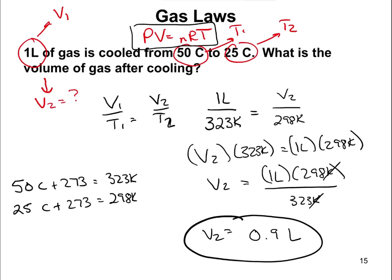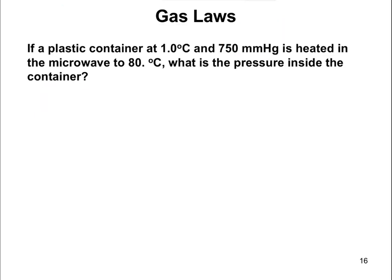Next problem: if a plastic container at 1 degree Celsius and 750 millimeters of mercury is heated in the microwave to 80 degrees Celsius, what's the pressure inside? This explains why you always take the lid off Tupperware before microwaving — because using PV equals nRT, increasing temperature means pressure goes up since they're on opposite sides of the equation. The relationship is P1 over T1 equals P2 over T2.